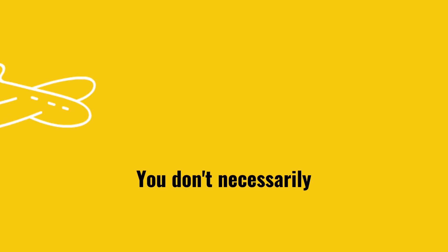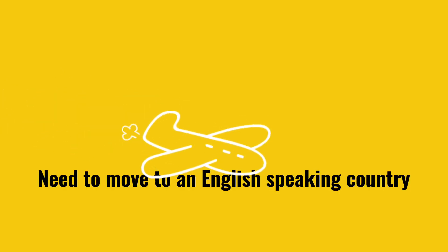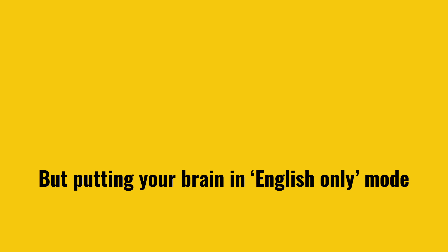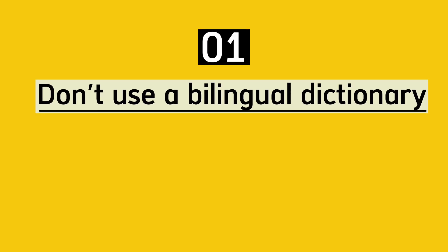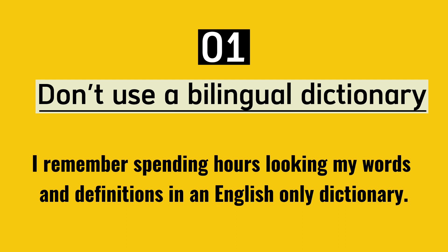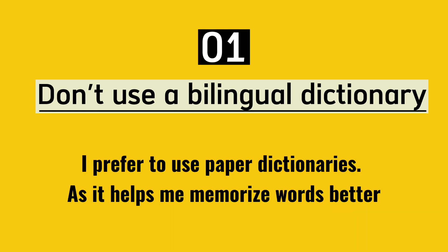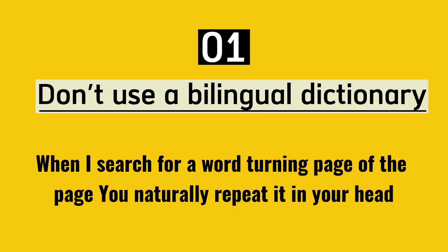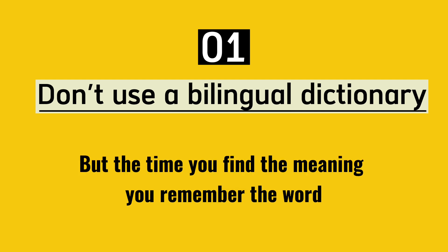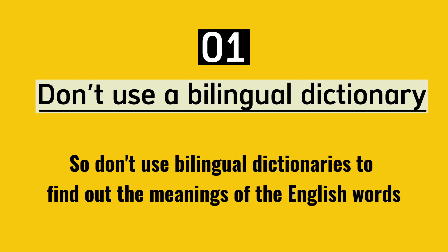You don't necessarily need to move to an English-speaking country, but putting your brain in English-only mode will definitely help. Here are some tips that helped me. First: don't use a bilingual dictionary. I remember spending hours logging words and definitions in an English-only dictionary. I prefer paper dictionaries as it helps me memorize words better — searching page after page, you naturally repeat the word in your head, and by the time you find the meaning, you remember it.